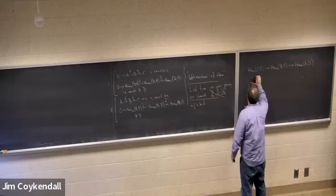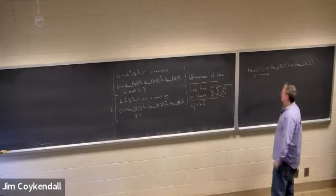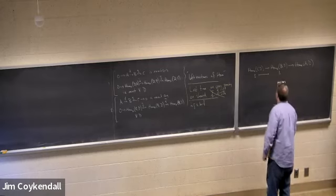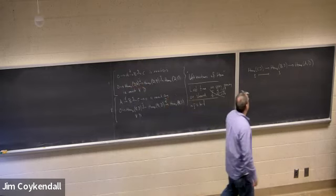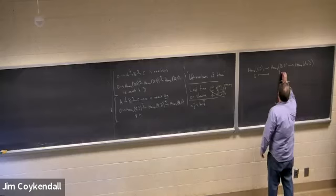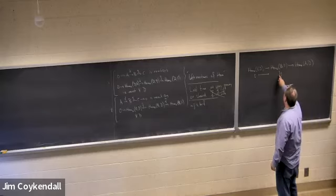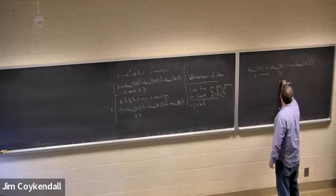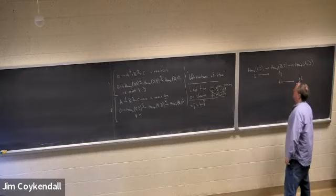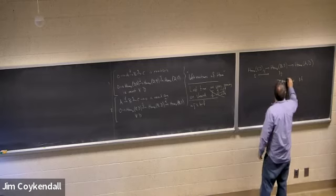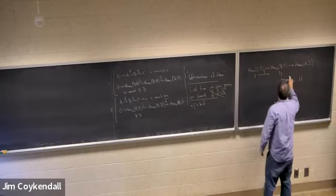So if you have some homomorphism phi from B to D, well to get from B to D we have to use the hook here. So I need to go from B to C first, and then C to D. Likewise if I start with some gamma here, we go from B to D. This is the map induced by g, and this is the map induced by f.